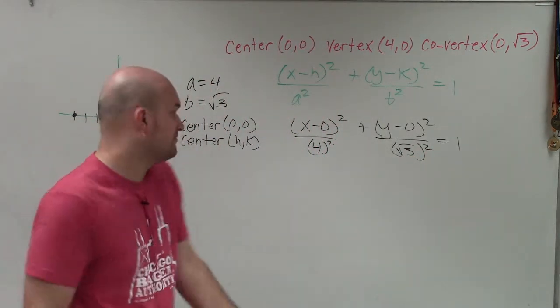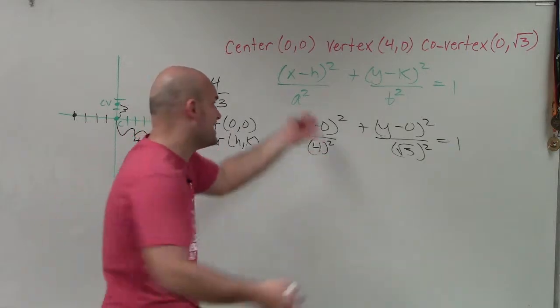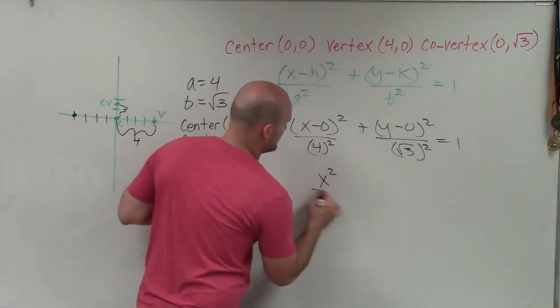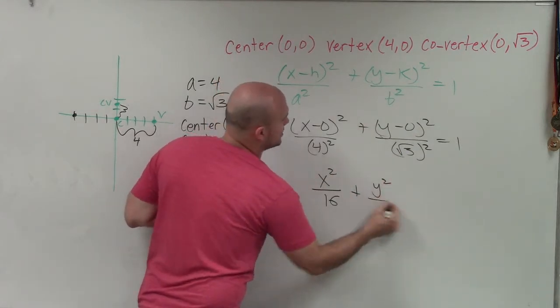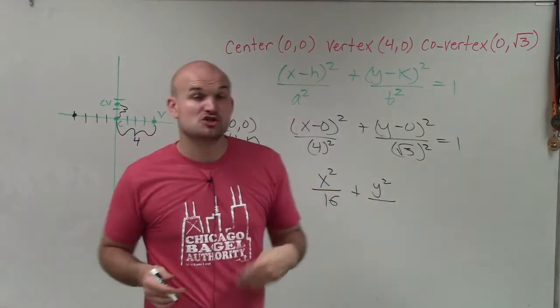Now we simplify. x - 0 is just x, so I have x²/4² = x²/16. And y - 0 is just y, so that's y²/(√3)².